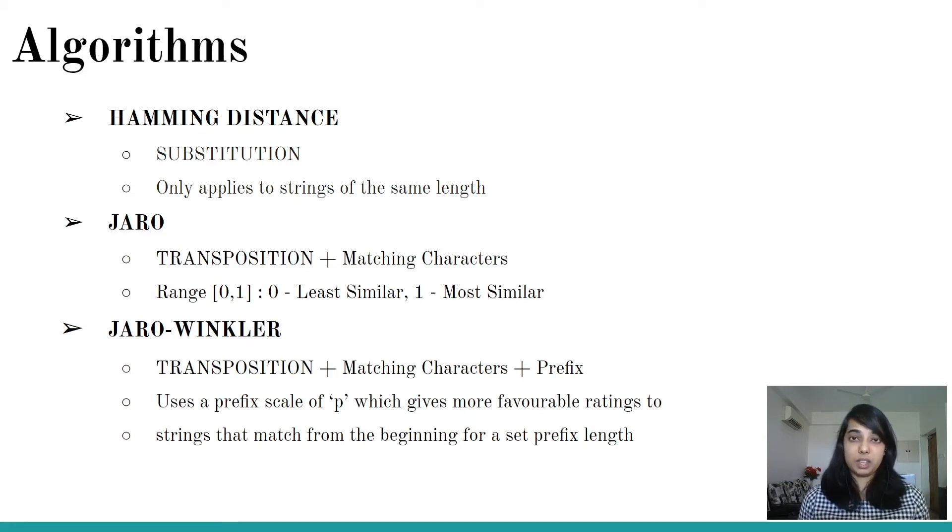Jaro and Jaro-Winkler are pretty amazing when you have multiple words. When you have two or three words and you want to see their similarity using edit distance functionality, it uses only transposition and matching characters. Insertion and deletion involve a lot of operations. When you only talk about transposition and matching characters, you get a range of 0 to 1 where 0 is the least similar and 1 is the most similar strings. You get this probability and based on that you can decide. Jaro-Winkler is an enhancement to Jaro where it also takes into account the prefix.